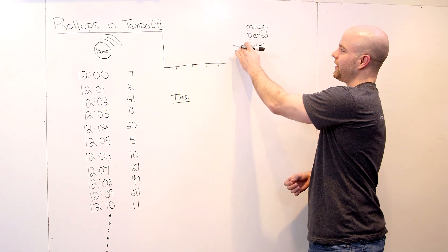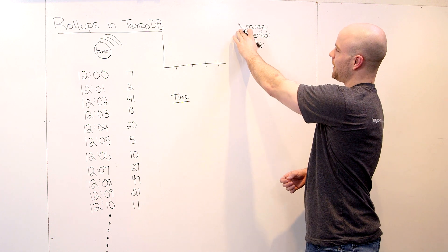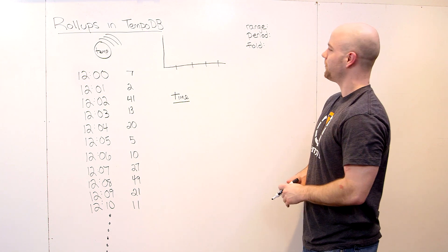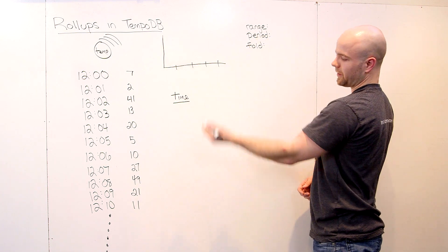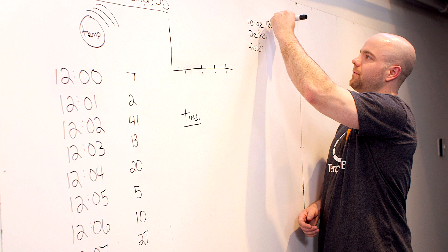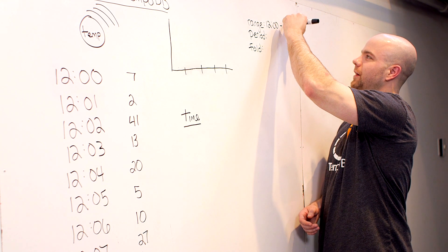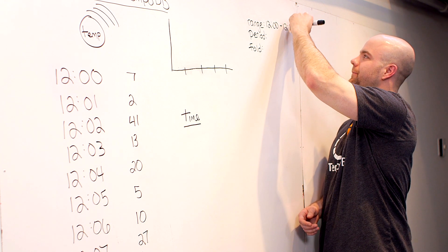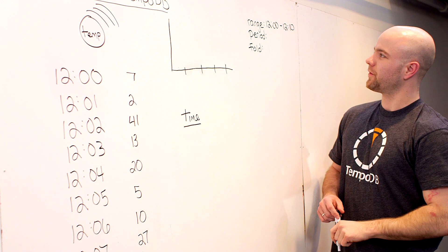So roll-ups take three parameters: range, period, and fold. The range is just the start and end time of the data points you want to query. So in this example, we've got a start time of 12 and an end time of 12:10, written up here on the board. So that's what we're going to go with.